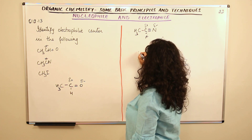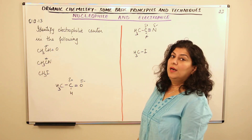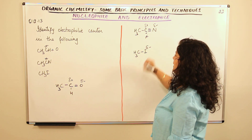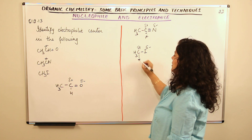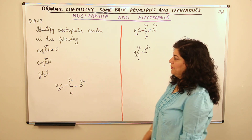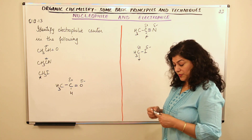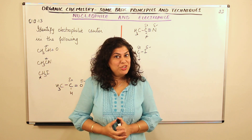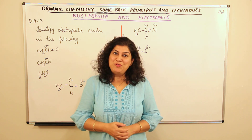In CH3I, iodine is a halogen and more electronegative, attracting electrons towards itself making the carbon partially positive. Therefore, the electrophilic center in CH3I is the carbon atom. With this, we have identified the electrophilic centers in all three compounds. If you found this helpful, please give it a thumbs up, subscribe to the channel, and keep returning for more chemistry videos.